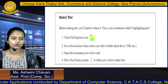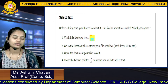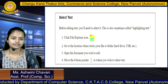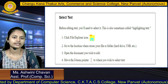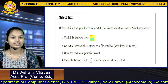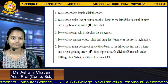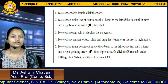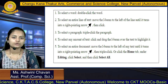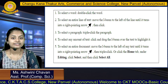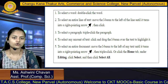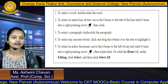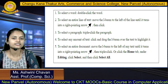Open the document you want to edit, then move the I-beam pointer — the I-shaped symbol — to where you want to select the text. To select a word, double-click on that word. To select an entire line of text, move the I-beam to the left of that line until it turns into a right-pointing arrow, then click.